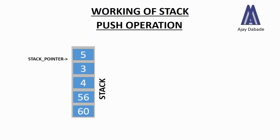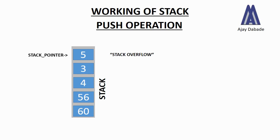At last we will push the number 5, and again the stack pointer will point to number 5. So the stack pointer always points to the top of the stack. At the top we have the number 5, and below it are 3, 4, 56, and 60. Number 5 was the latest number pushed, so the stack pointer always points to the top of the stack.